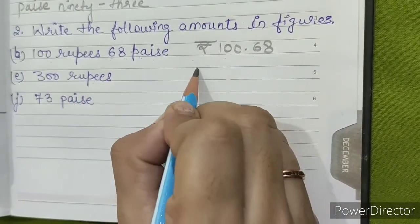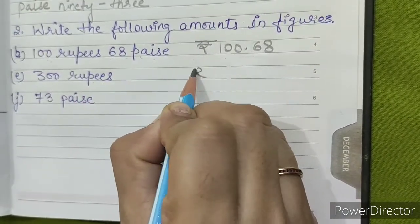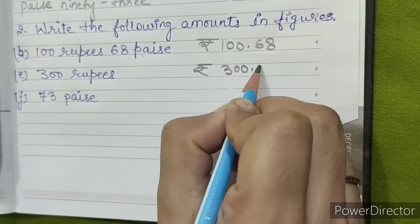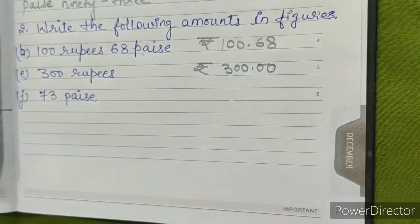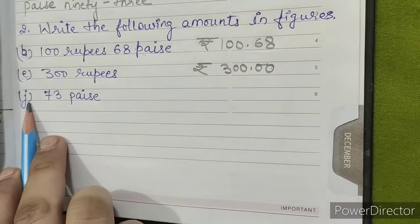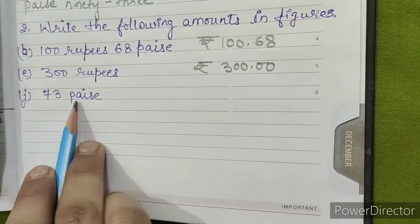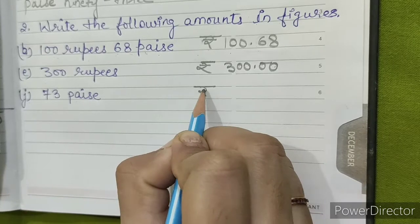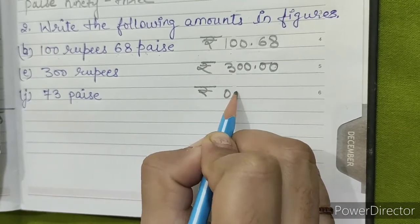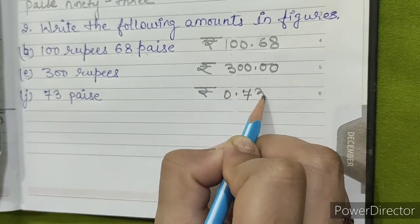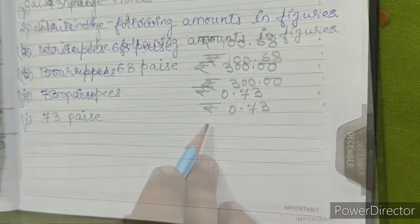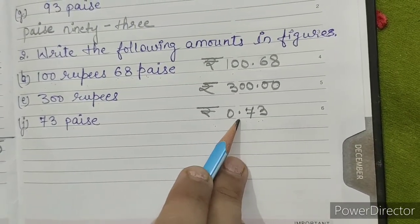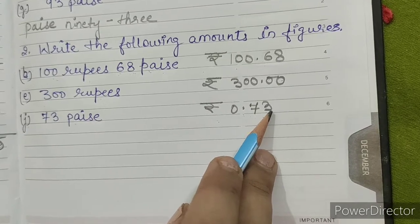E. 300 rupees. So rupees 300. Now J. 73 paise — we'll read it as 0.73 paise.